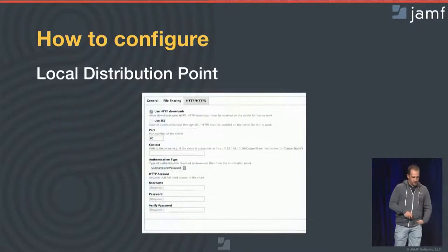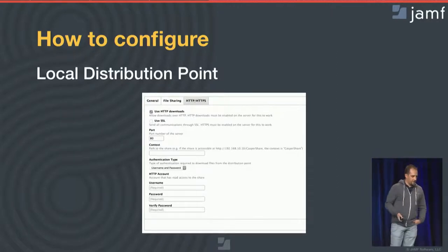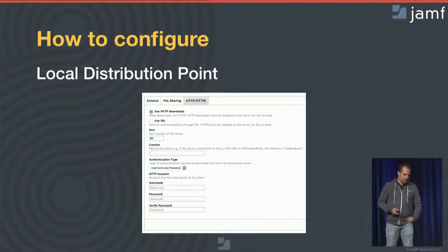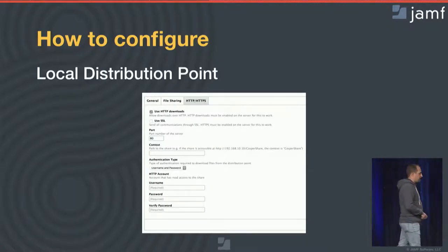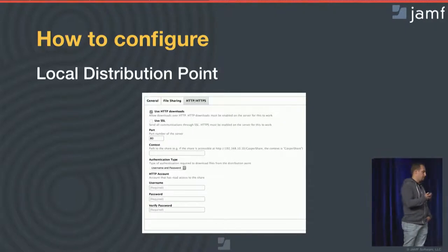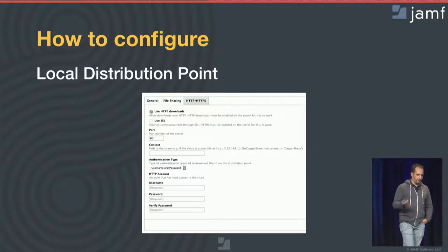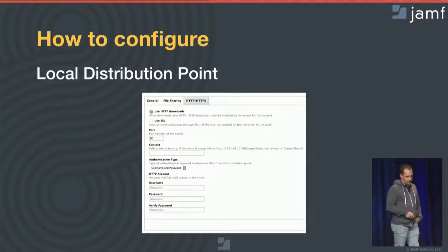Then we have the option to enable HTTP. There are maybe two main reasons why you want to do that. First is performance — downloads will go a bit faster than SMB. But the most important reason is resumable downloads. If you're managing MacBooks and end users close the lid in the middle of a deployment, with SMB it would actually kill the download and it would have to start over. With HTTP, you get resumable downloads, which is a more efficient way of doing things.